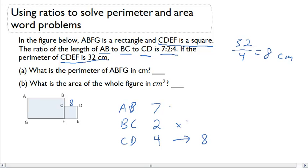So I'm going to do BC, 2 times 2, which is going to give me 4. So BC has to be 4. And I'm also going to give AB times 2, which is going to give me 14. So AB is now 14.